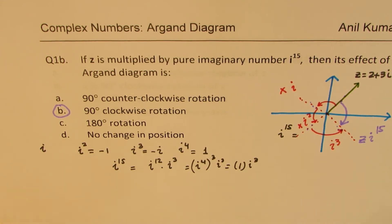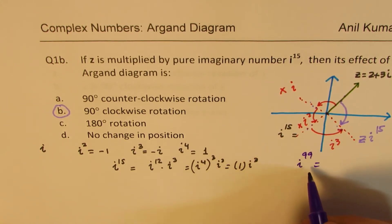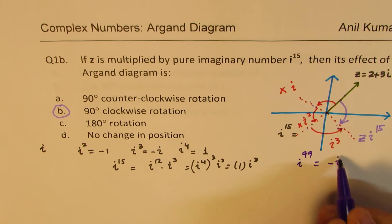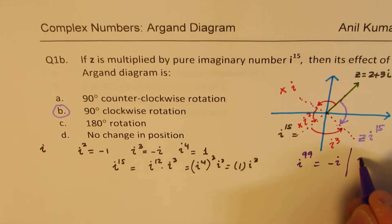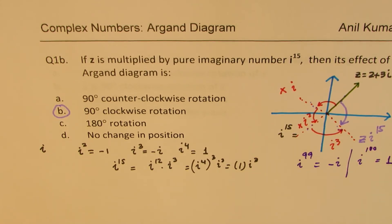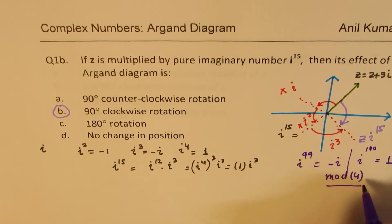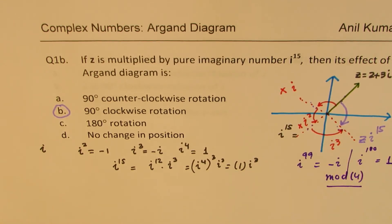This is related to a similar question: what is i to the power of 99? Well, that is equal to minus i. Since i to the power of 100 equals 1, i to the power of 99 is 1 less than that — so it is like mod 4, the remainder after division by 4. I hope this concept is absolutely clear.